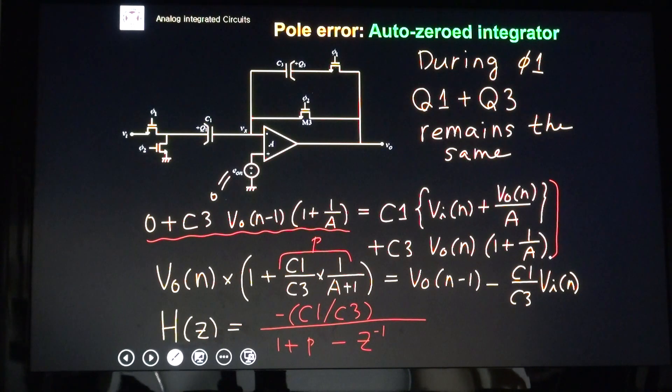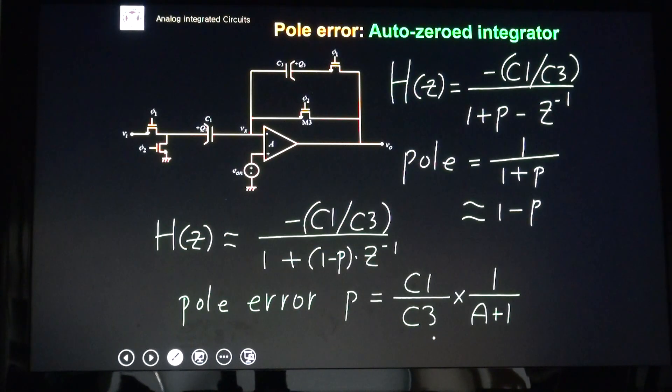Here, from this equation, we can get transfer function, which is the same transfer function as in a conventional switch capacitor integrator. So, here, we have a pole error. The pole value is around minus one over P. So, this pole error is the same as a conventional switch capacitor integrator.